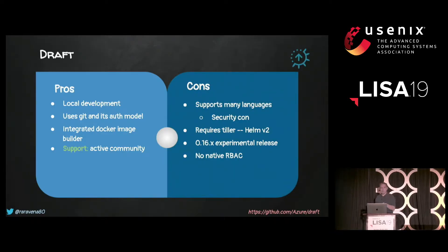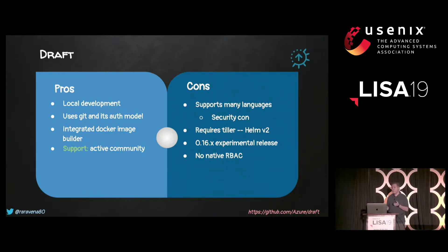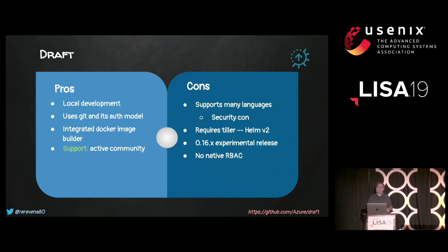Looking at the pros and cons of Draft: pros include local development support, a well-proven Git authentication model, its own image builder which reduces tampering risk, and a very active community. Cons include the many supported languages being a potential security problem, and if you're using Helm V2, you may be vulnerable because you're connecting across the network to the Tiller component. It's a 0.16 release so it's experimental, and there's no native RBAC support yet.